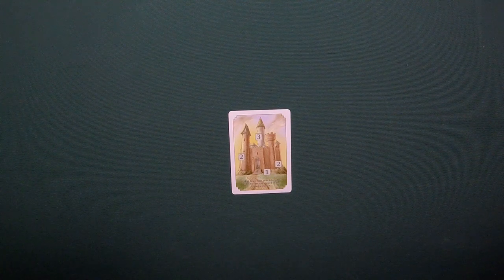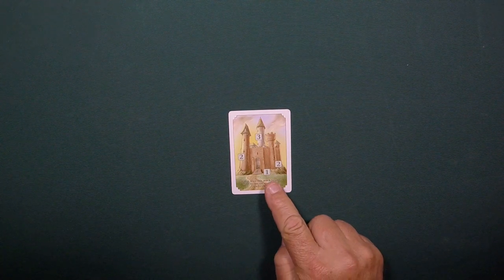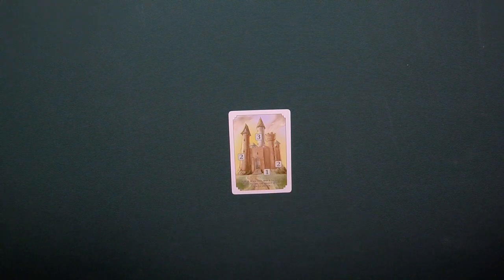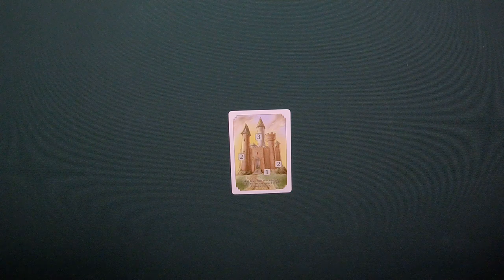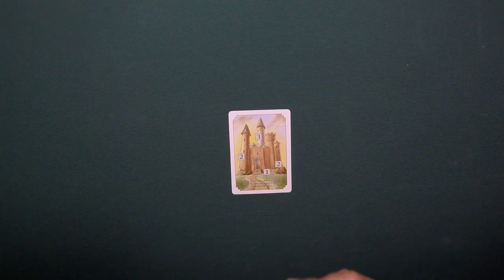The squares on the castle card show where the stones go and how much you needed to have bid to be able to put a stone there. So if you had bid four stones and had the highest hand, you could place stones here and here.